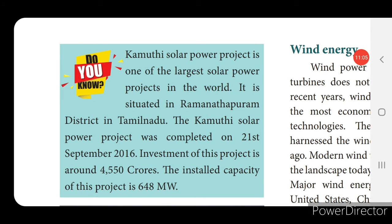Kamuthi solar power project is one of the largest solar power projects in the world. It is situated in Ramanathapuram district in Tamil Nadu. The project was completed on 21st September 2016, with an investment of around 4,550 crores and an installed capacity of 648 MW.